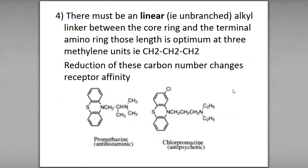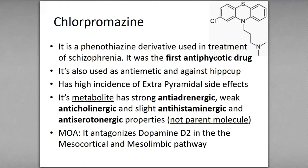Chlorpromazine is a phenothiazine derivative used in the treatment of schizophrenia, and it was the first antipsychotic drug. It is also used as an antiemetic against hiccups. It has a high incidence of extrapyramidal side effects (EPS). Its metabolite has stronger anti-adrenergic, weak anti-cholinergic, slightly anti-histaminergic, and anti-serotonergic properties. The metabolite is more active than the parent molecule.